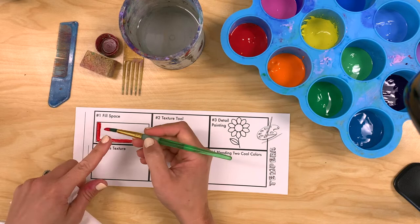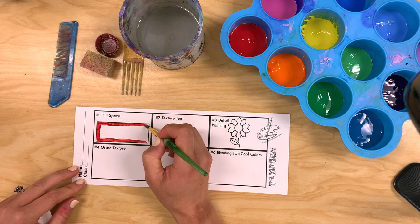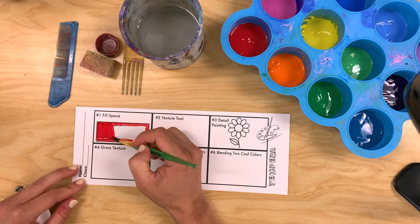This might be a small object like an apple or it might be a large area like a sky. Notice how I'm only getting a small amount of paint on my brush. I don't want the paint on the metal part of the brush.